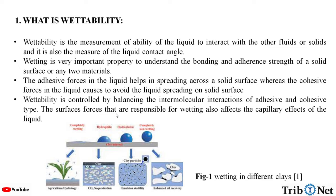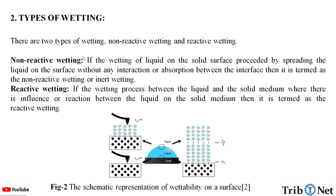Wettability is controlled by balancing the intermolecular interactions of adhesive and cohesive type. The surface forces responsible for wetting also affect the capillary effects of the liquid. Here in this figure, we can see the wetting on different surfaces of the clays. There are two types of wetting: non-reactive wetting and reactive wetting. Non-reactive wetting: if the wetting of the liquid on the solid surface proceeds by spreading the liquid on the surface without any interaction or absorption between the interface, then it is termed as non-reactive wetting or inert wetting.